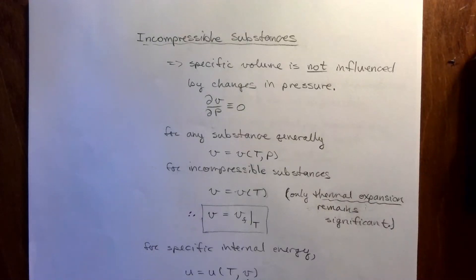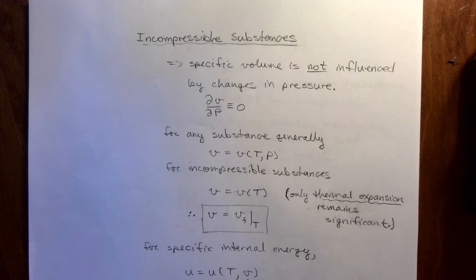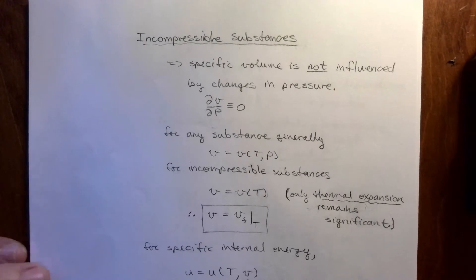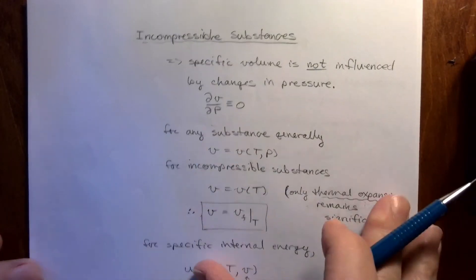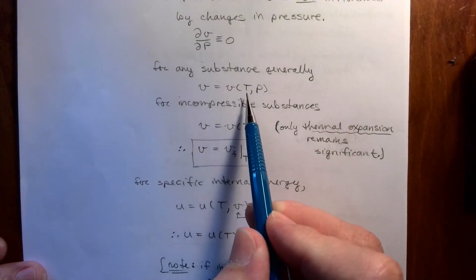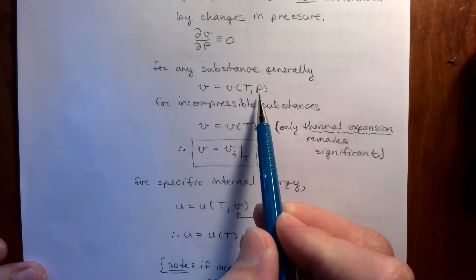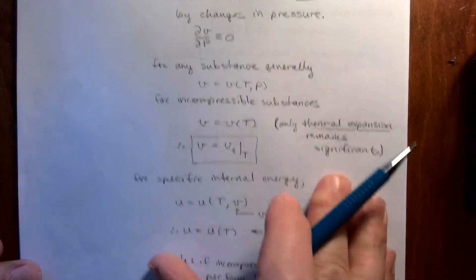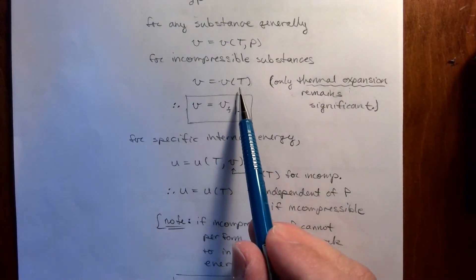As a supplemental lecture, let's revisit incompressible substances — go through the theory again and think about how we would calculate enthalpy for liquids. For an incompressible substance, the definition of incompressible is that the specific volume is not influenced by changes in pressure, so the partial of V with respect to P is zero. In general, specific volume would normally be dependent on two independent properties, temperature and pressure.